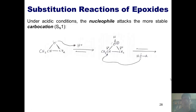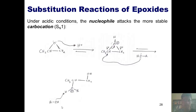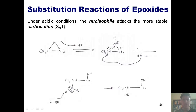Forming a bond and pumping these electrons up into this oxygen to neutralize its charge gives me an intermediate. A second molecule of alcohol, presumably the solvent, comes and grabs that proton, pumping electrons into the oxygen to neutralize its charge, forming the product. This is the product under acidic conditions. Under acidic conditions, the nucleophile attacks the carbon that forms the more stable carbocation — in this case, a secondary carbocation.